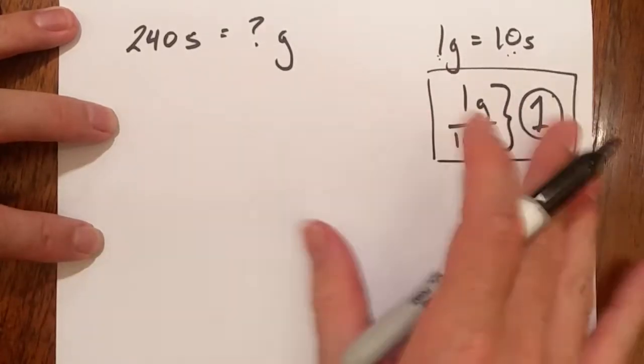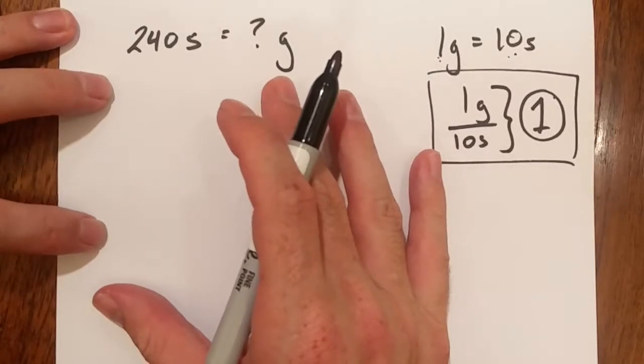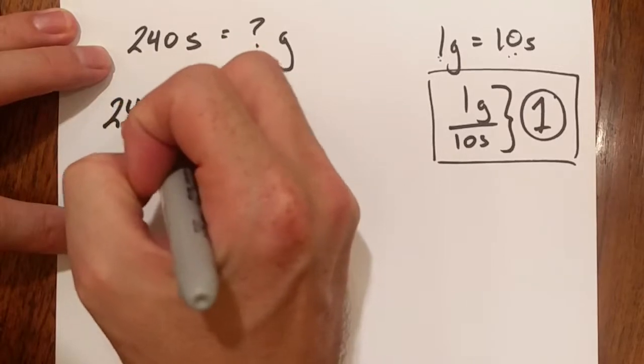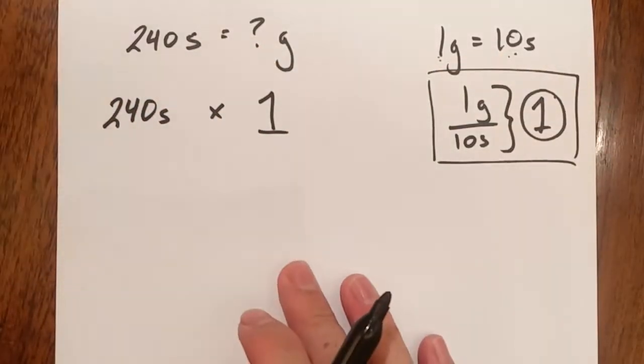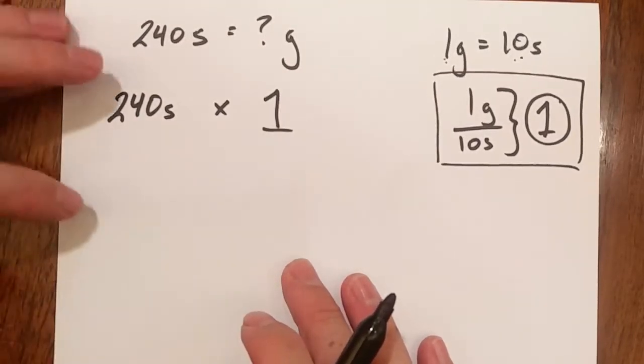A little bit more background information: if I take anything and multiply it by one does it change? No it stays the same. So if I have 240 silver and I times all that silver by one do I have any more silver? No I still have the same amount of silver because I just times it by one.